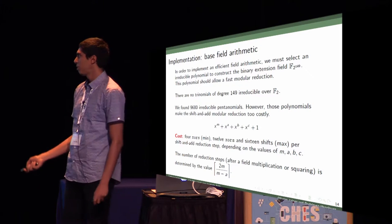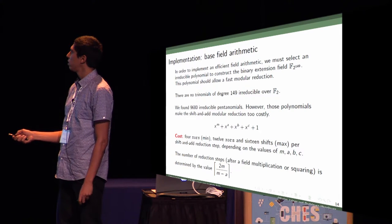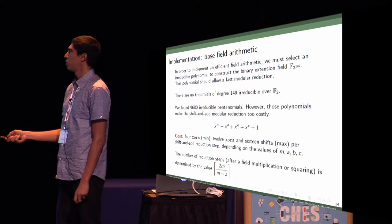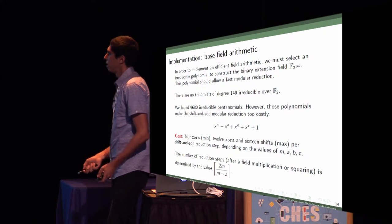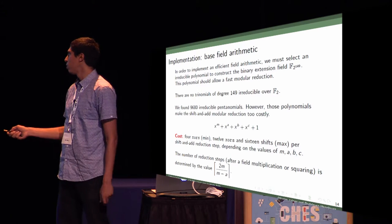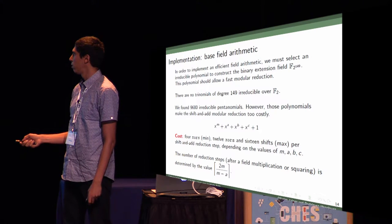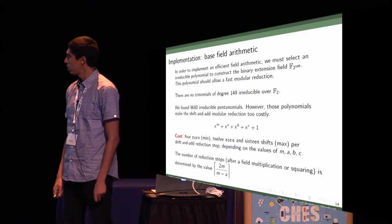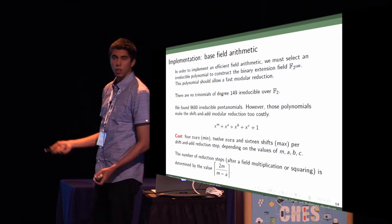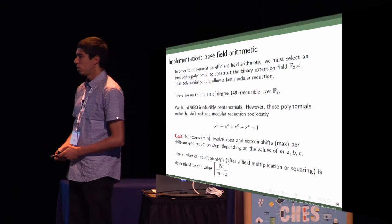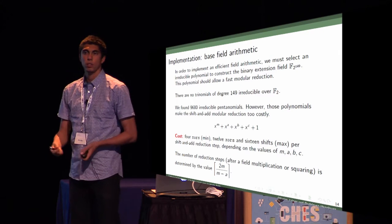We cannot find any pentanomials with this property to be reduced in four XORs. We have found lots of them between these two costs. In short, it's very costly to perform this modular reduction using pentanomials.